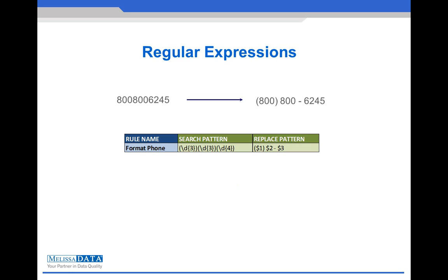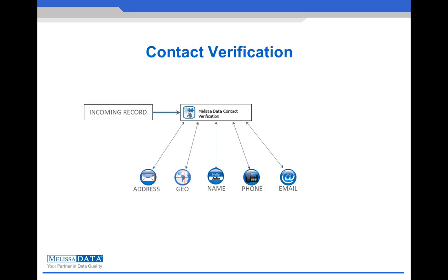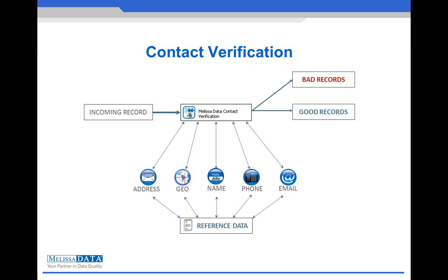The data quality components offer several ways of cleansing and standardizing. First is through regular expressions and standardization rules, which give you the flexibility to correct and verify any form of data such as phone numbers, dates, customer IDs, and more. MelissaData also provides components that are specific and specialized for addresses, names, phones, and email correction, validation, and parsing. With the MelissaData APIs as its driving engine and an extensive collection of reference data, we give you the best possible results for contact verification and correction, making sure that your records are accurate, legitimate, and consistent.